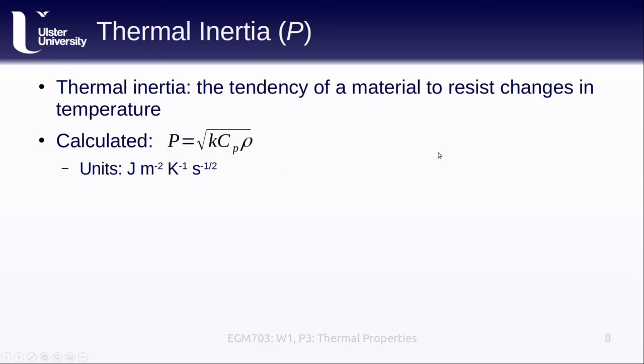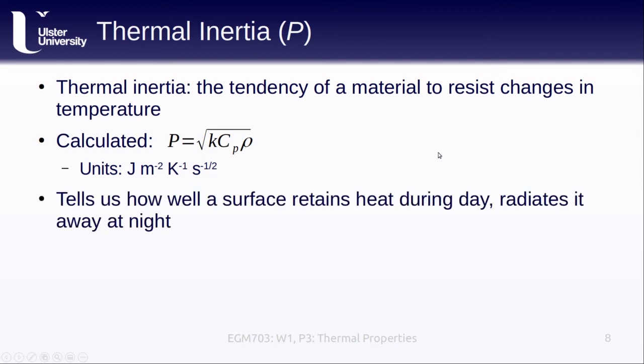Another way to think about this is that the thermal inertia tells us how well a surface or material retains heat during the day and how well it radiates heat away at night. Or, what the rate of heat transfer is at the contact between two different materials. For example, the Earth's surface and the atmosphere. Unfortunately, calculating thermal inertia directly is difficult. We need to know the thermal conductivity, we need to know the specific heat capacity, and we need to know the density of each of the materials that we're trying to observe.